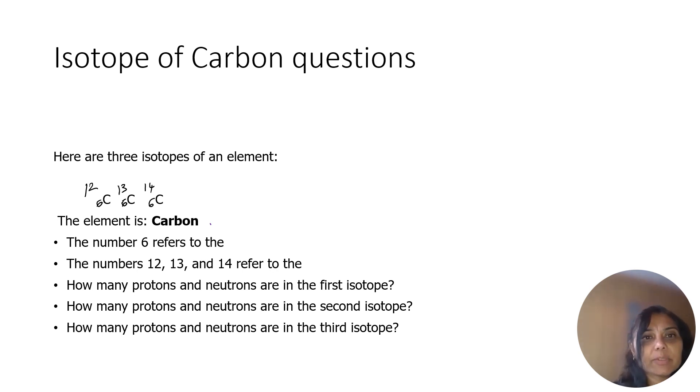Welcome back to Field Science Education. Today we'll be looking at an exam question on isotopes of carbon. Carbon has three isotopes: 12, 13, and 14. Carbon-12 is the most abundant in nature.